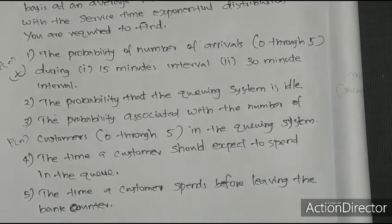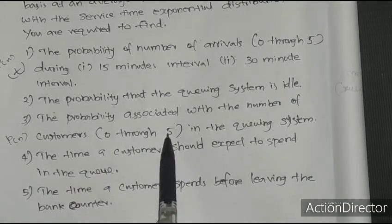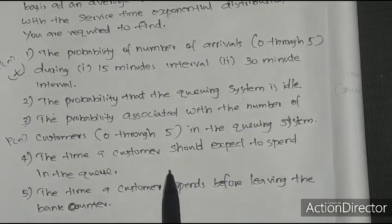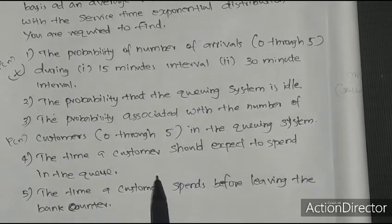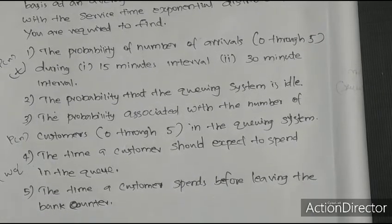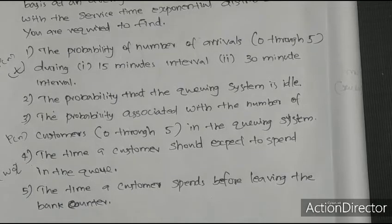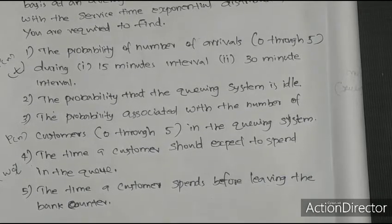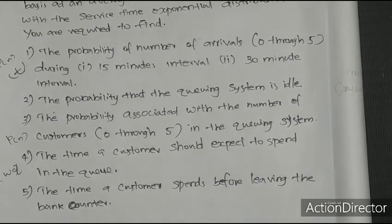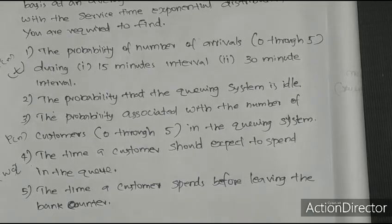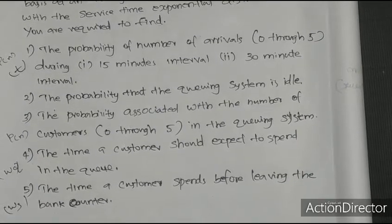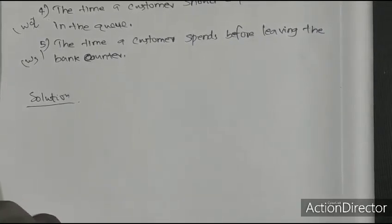For n from 0 to 5, we will calculate the probability of n. The time a customer should expect to spend in the queue — that is Wq. The time a customer spends before leaving the bank counter — that is Ws. We will calculate these equations by applying the formulas.